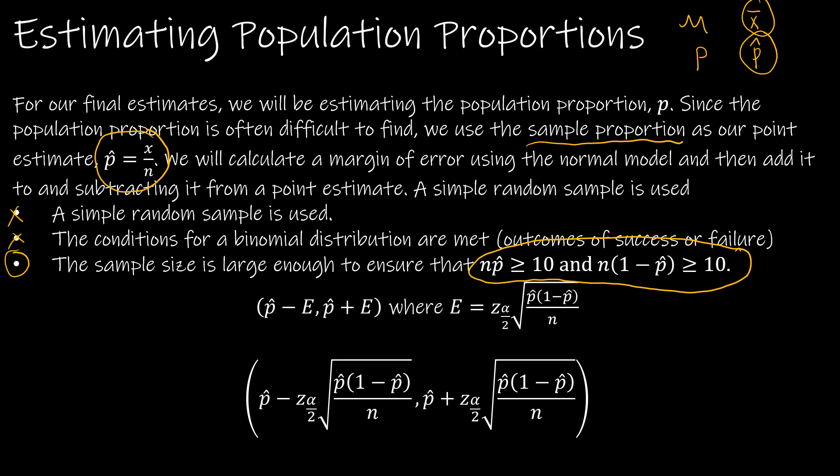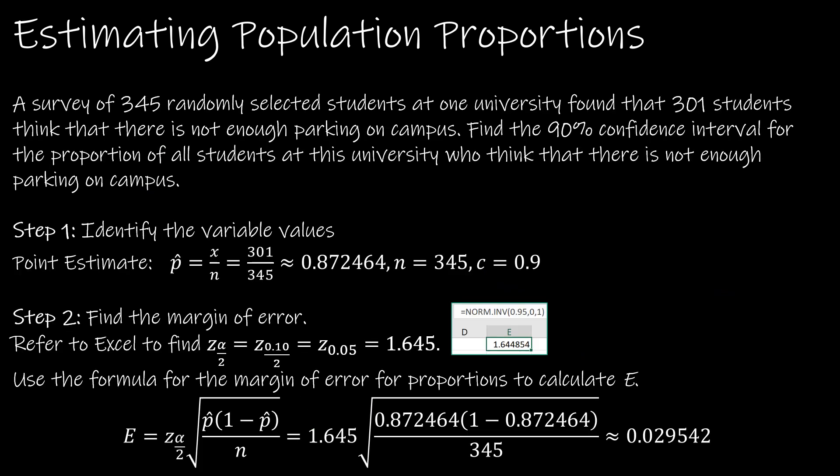If that's the case, then we're going back to our normal model. So we're going to be using norm inverse instead of T inverse as we did in our last video. We're going to find that standard error using P hat Q hat over n and then taking the square root. Remember I keep calling it Q hat - your book does not call it Q hat, but it's really just 1 minus P hat.